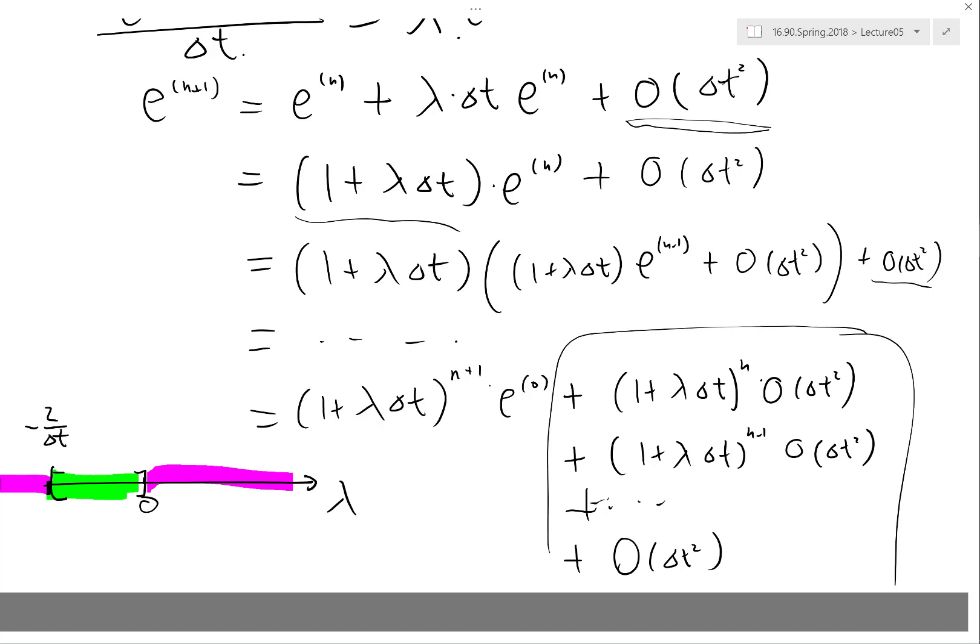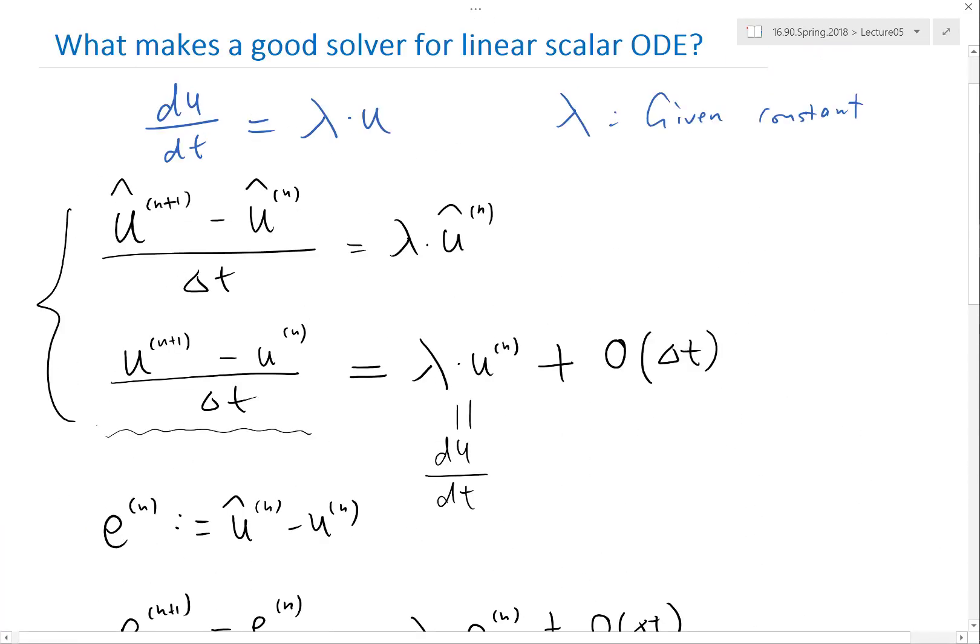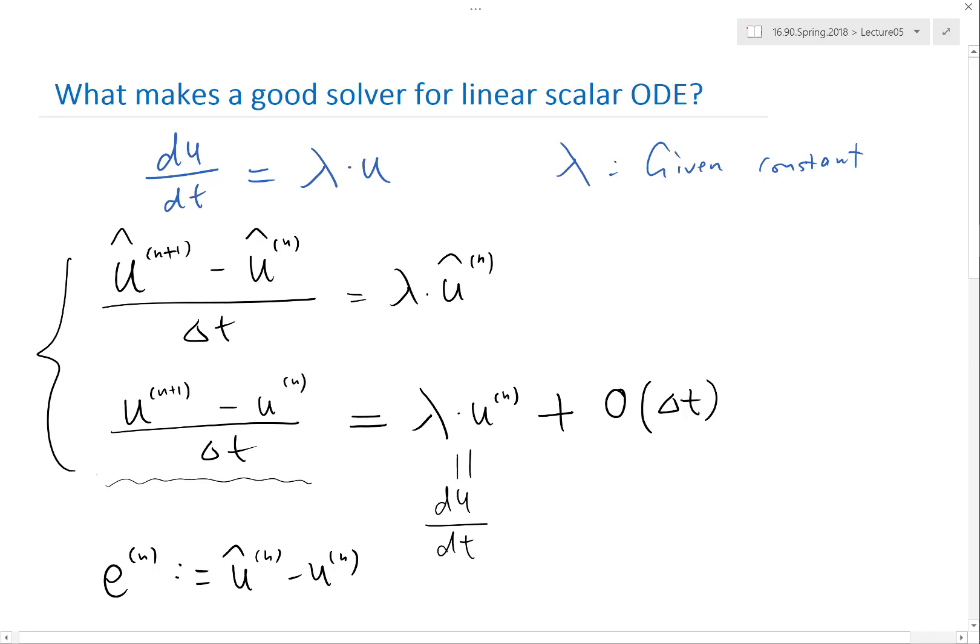Exactly, so that the green region expands as you decrease your delta t. It will ultimately encompass the lambda you want to solve. So forward Euler actually can solve all these scalar equations with negative lambda as long as you have a small enough delta t.